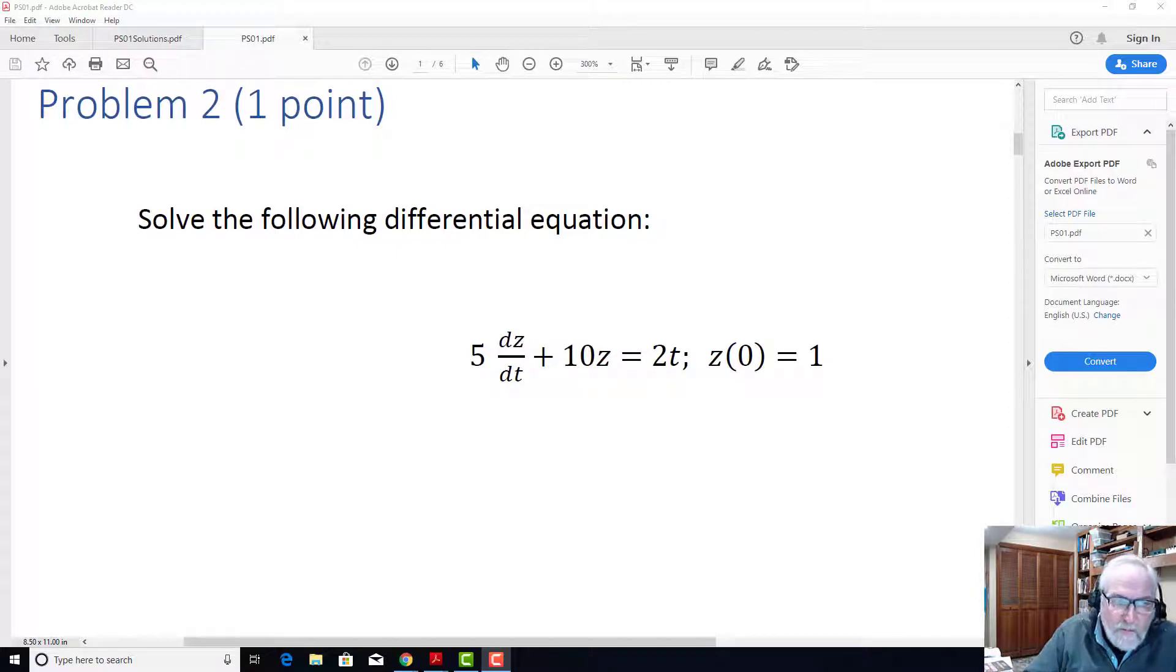So now we're looking at the second problem in problem set one. Again it's a first-order differential equation as you can see here, but in this case it's non-homogeneous, meaning that it has a forcing function. The forcing function is here on the right hand side, it's 2t.